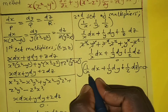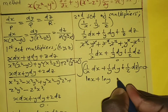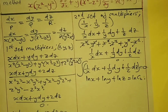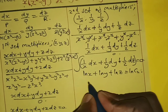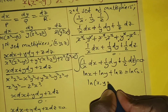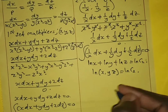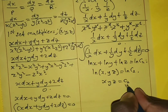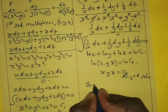Integrating 1/x gives ln x, 1/y gives ln y, and 1/z gives ln z. Adding these: ln x plus ln y plus ln z equals ln(xyz). Setting this equal to ln c₂, the logarithms cancel and we get xyz equals c₂. This is our second solution.